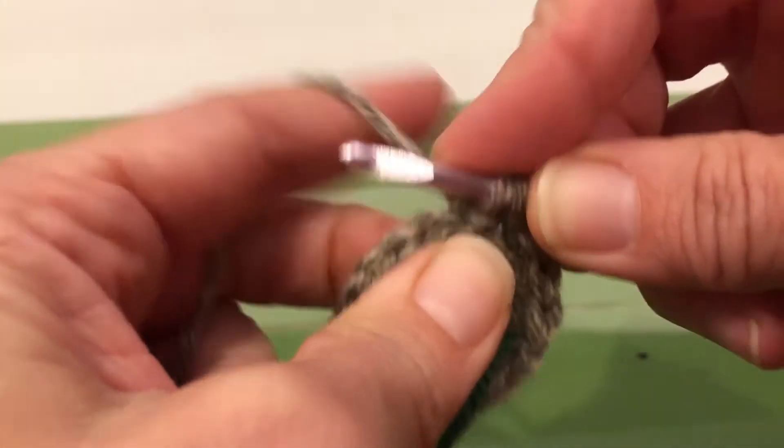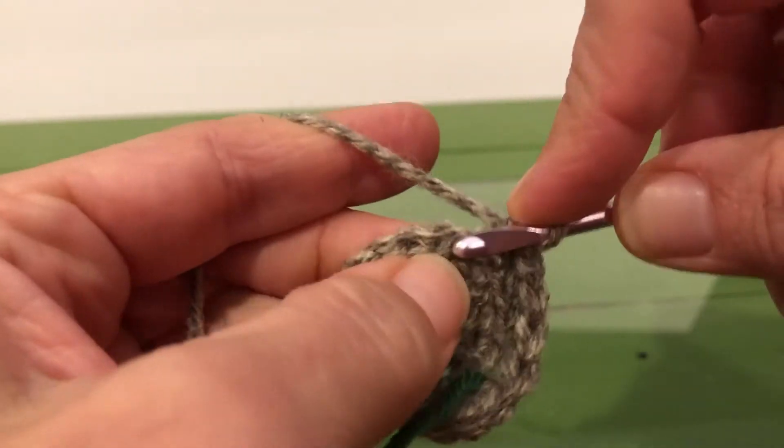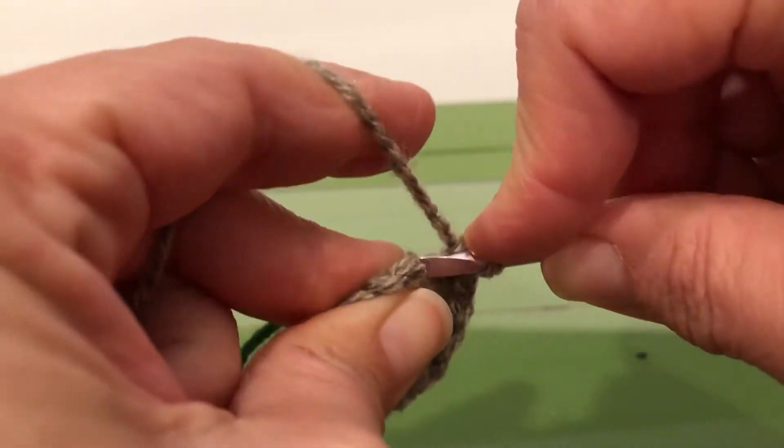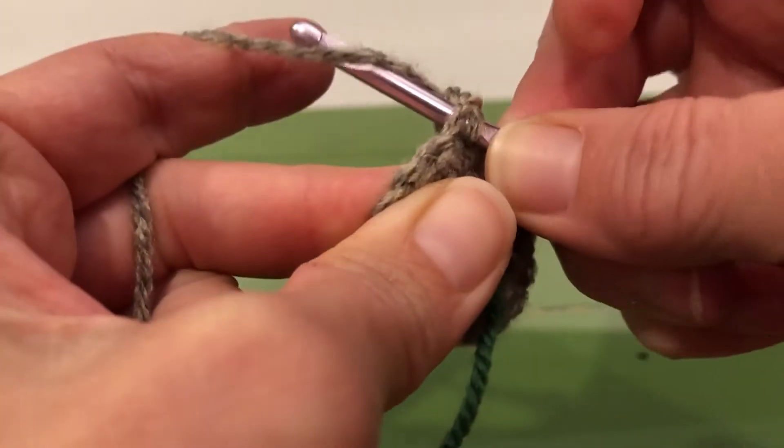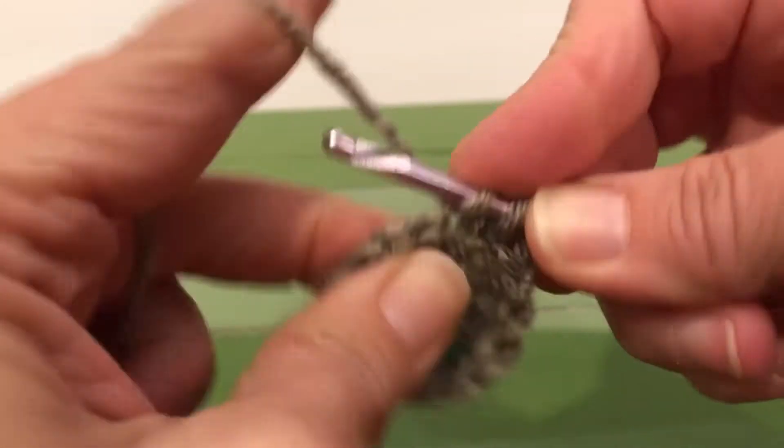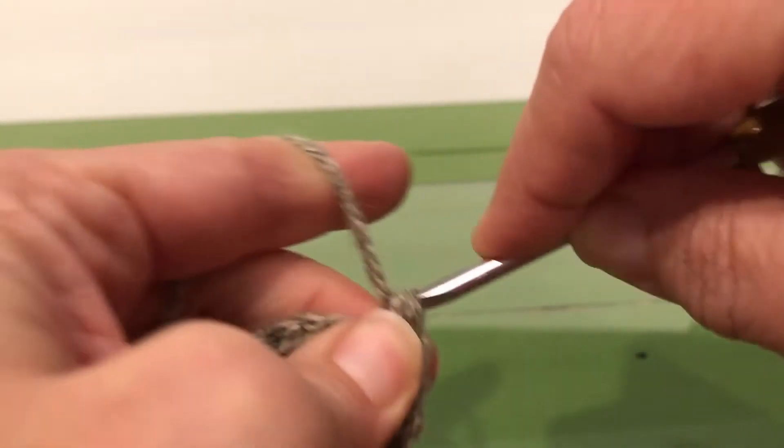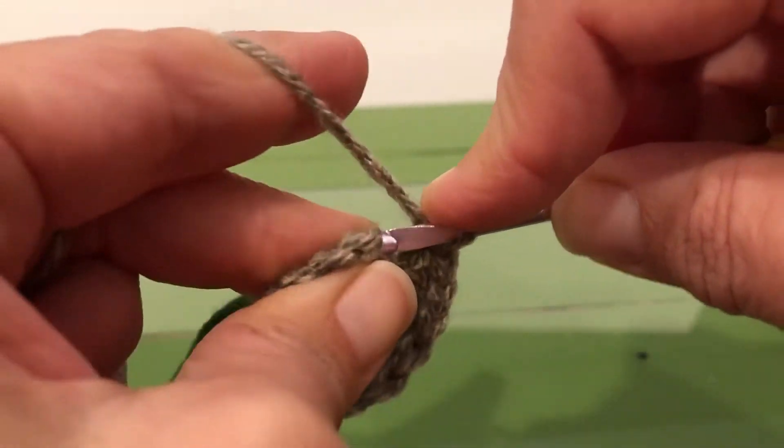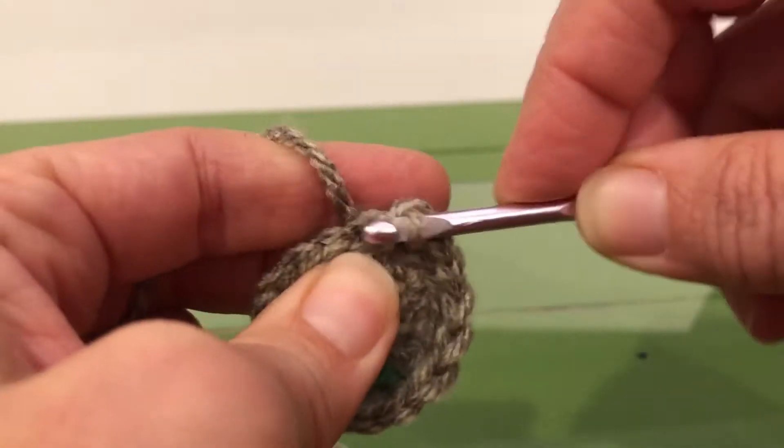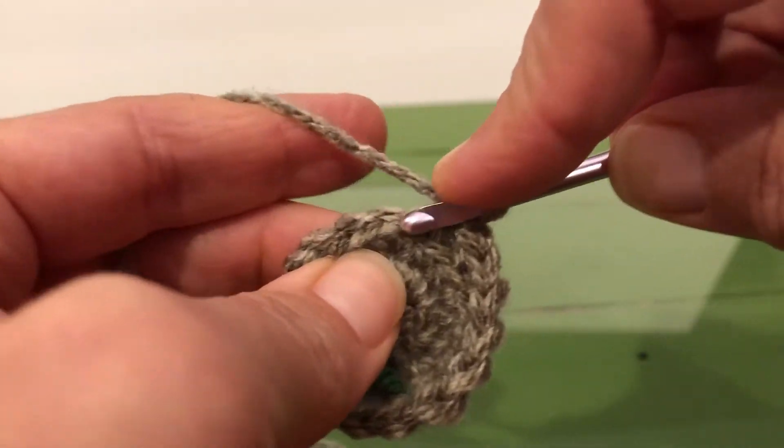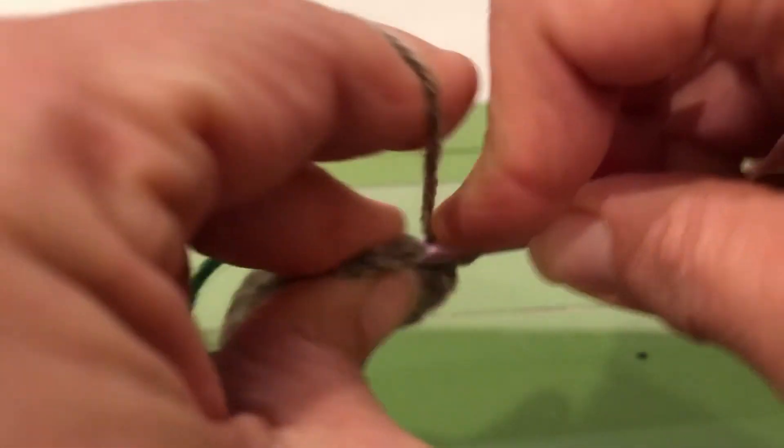See how it moves in smoothly. In the back, yarn over, pull through, yarn over, pull through the two. These are all single crochets only. That's the joy of this pattern. It's quite simple, and it's a good place to start.